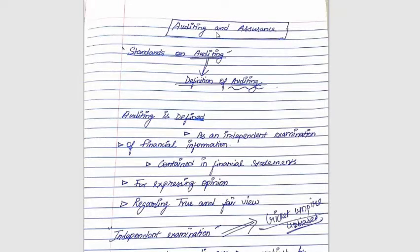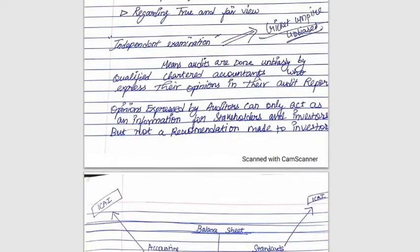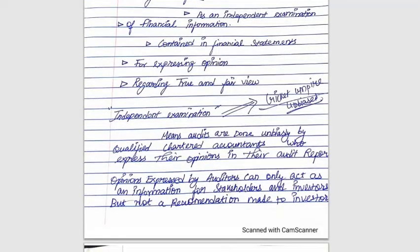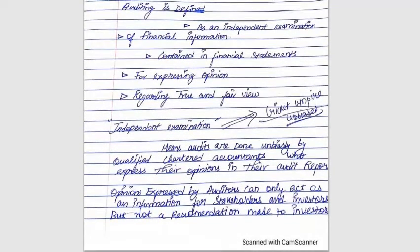What do we mean by independent examination? Audits are done unbiasedly by qualified Chartered Accountants who express their opinions in their audit reports. Opinions expressed by auditors can only act as information for stakeholders and investors, but not as a recommendation. Like a cricket umpire who must be unbiased towards both teams — if it's out, say out; if it's not out, say not out — an auditor must conduct an independent examination.